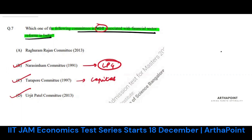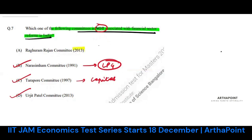The Raghuram Rajan Committee was formulated multiple times. The 2007-08 Raghuram Rajan Committee was formulated after the financial crisis, and its aim was to carry out reforms of the financial sector. So had this been the 2007-08 committee, it would also have been related to the financial sector. However, in 2013, the committee formed by Raghuram Rajan was aimed at reducing the fiscal deficit.